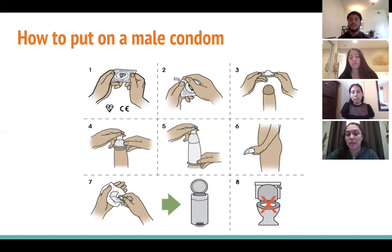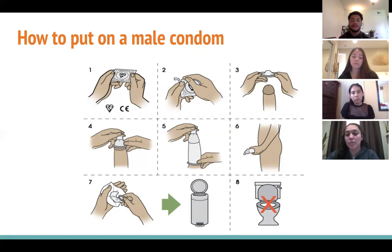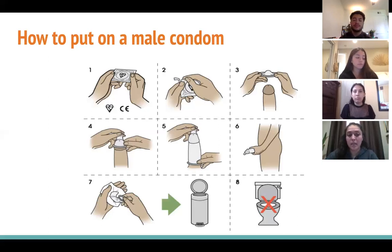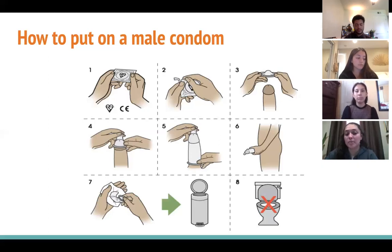Step five is optional: add drops of water-based or silicone lubricant on the outside of the condom to help prevent it from breaking. Step six: once your partner has ejaculated, hold the rim of the condom securely while pulling the penis out. Step seven: remove the condom by pulling the penis out while holding the rim securely. Properly throw the used condom in the trash — not down the toilet.